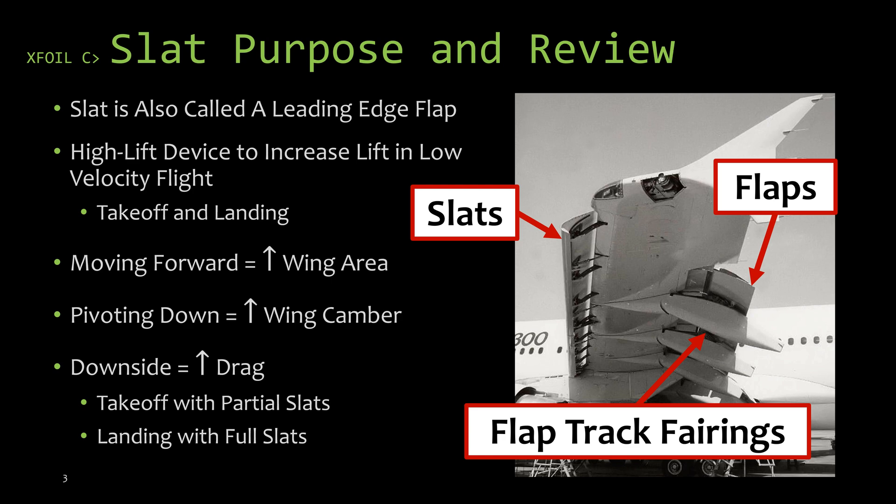Let's review what a slat is and what its purpose is. Basically, a slat, like a flap, is a high lift device to increase lift in low velocity flight, as in takeoff and landing. What you're doing is that you are changing the shape of the airfoil to create different lift properties of the airfoil.